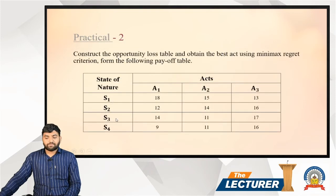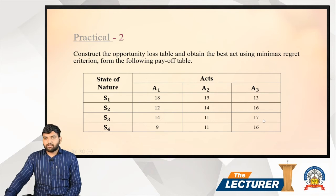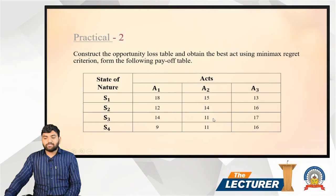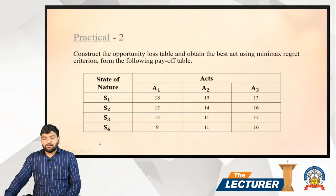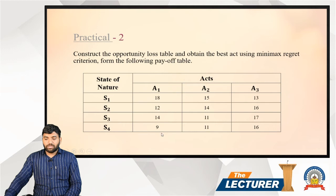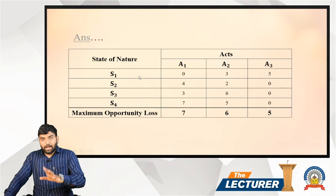For state S3: a1 = 14, a2 = 11, a3 = 17; highest is 17; losses are 17−14=3, 17−11=6, 17−17=0 — giving 3, 6, 0. For state S4: a1 = 9, a2 = 11, a3 = 16; highest is 16; losses are 16−9=7, 16−11=5, 16−16=0 — giving 7, 5, 0.